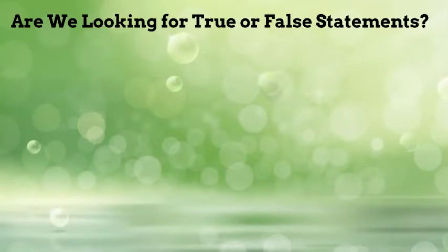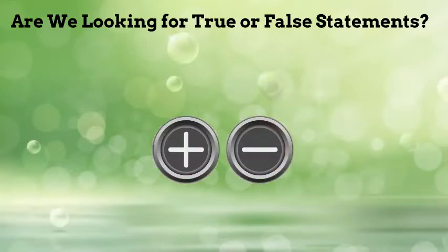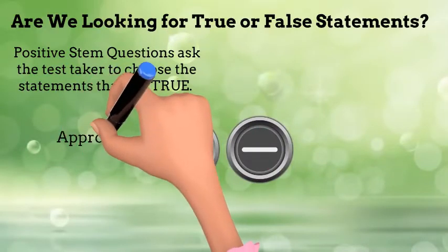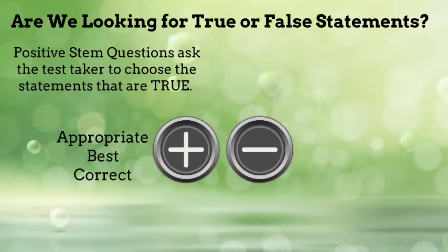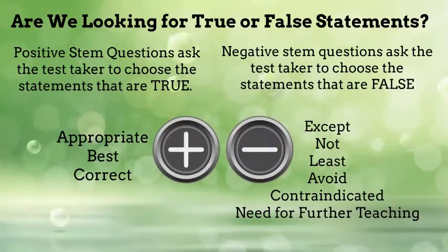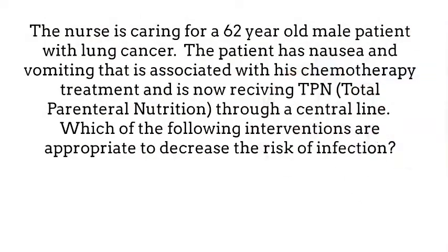Lastly, we will go back to the question to double check and decide if we're looking for true or false statements. We do this by looking at the stem of the question. There are two types of stems: positive stem questions and negative stem questions. Positive stem questions ask the test taker to choose the statements that are true — you will see terms such as appropriate, best, and correct. Negative stem questions ask the test taker to choose the statements that are false — you will see terms such as except, not, least, avoid, contraindicated, and a big one is the phrase 'need for further teaching.' You'll see what I mean when we go through our practice questions.